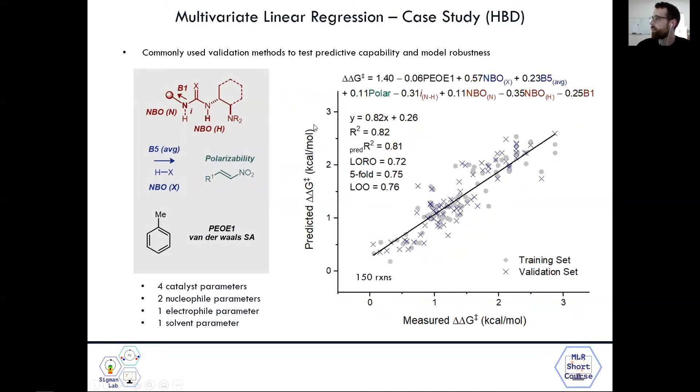So now that we've kind of fast forwarded and did the forward stepwise scan, we can now get to our optimal model, which I've shown here. It has an eight parameter model, which contains four catalyst parameters, two nucleophile parameters, one electrophile parameter, and one solvent parameter, accounting for solvent effects. So you'll see we have the different validation methods here, which we'll go through next.